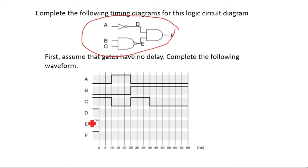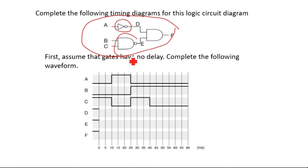We need to draw the timing diagram for D, E, and F. D has a NOT gate connected, E has a NAND gate connected, and F has an AND gate connected. So we need to know what a NOT gate, NAND gate, and AND gate are, then we will be able to draw the output waveform.